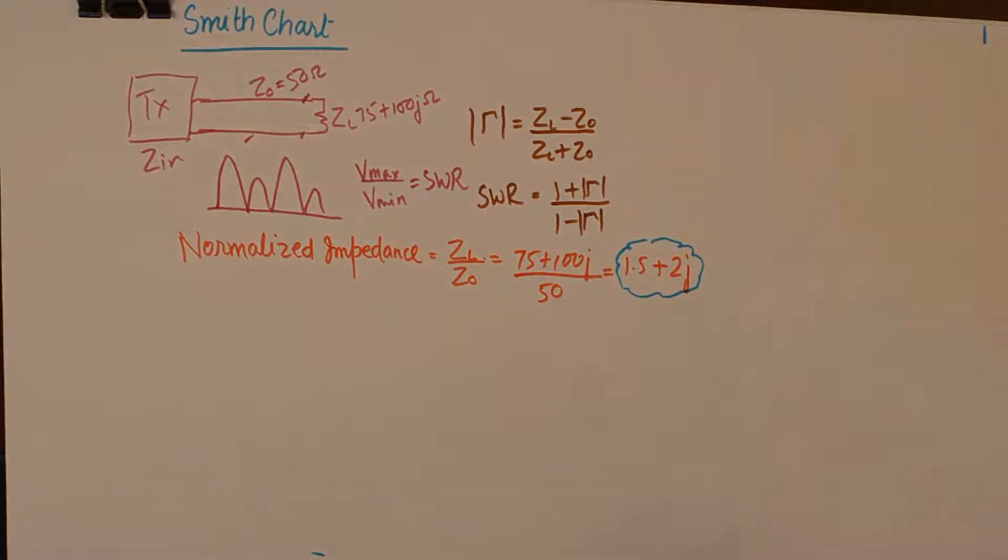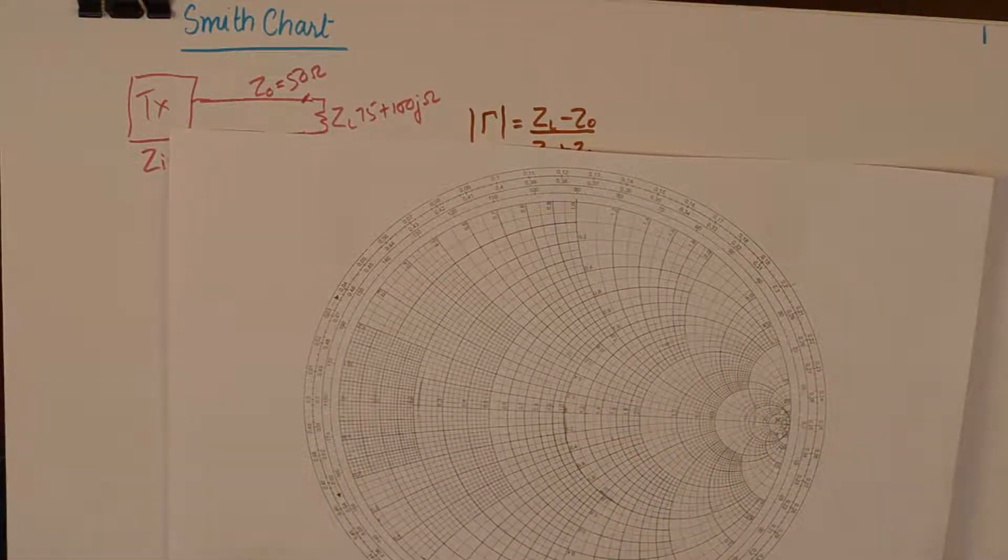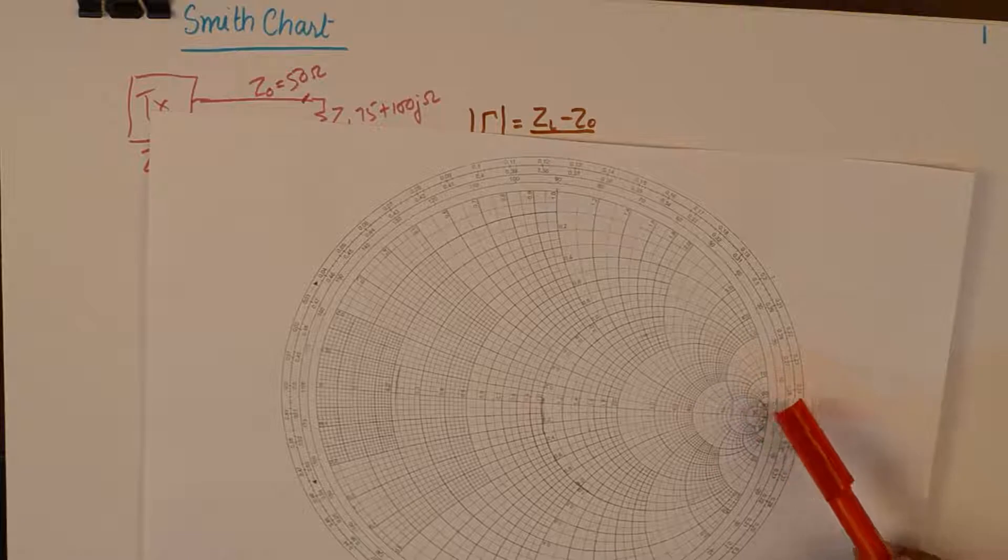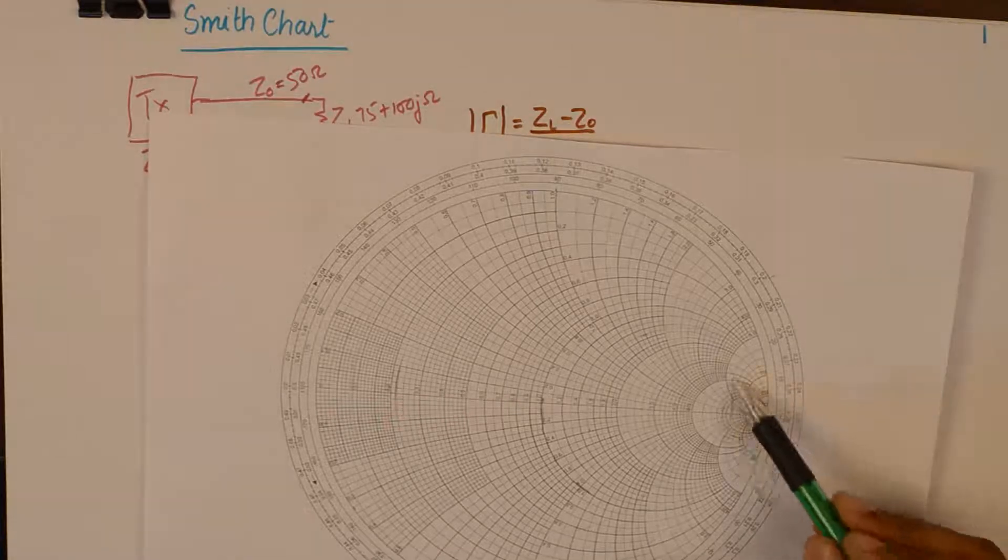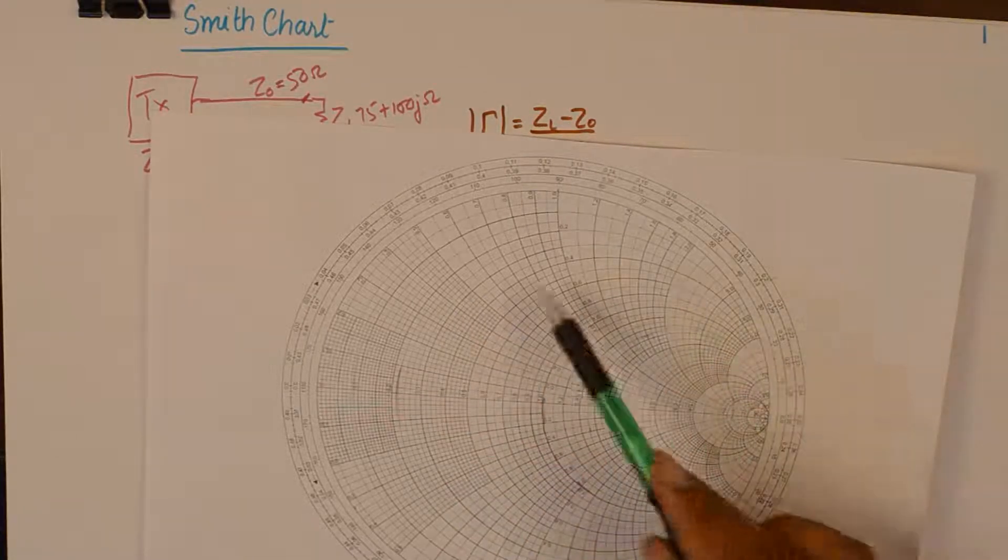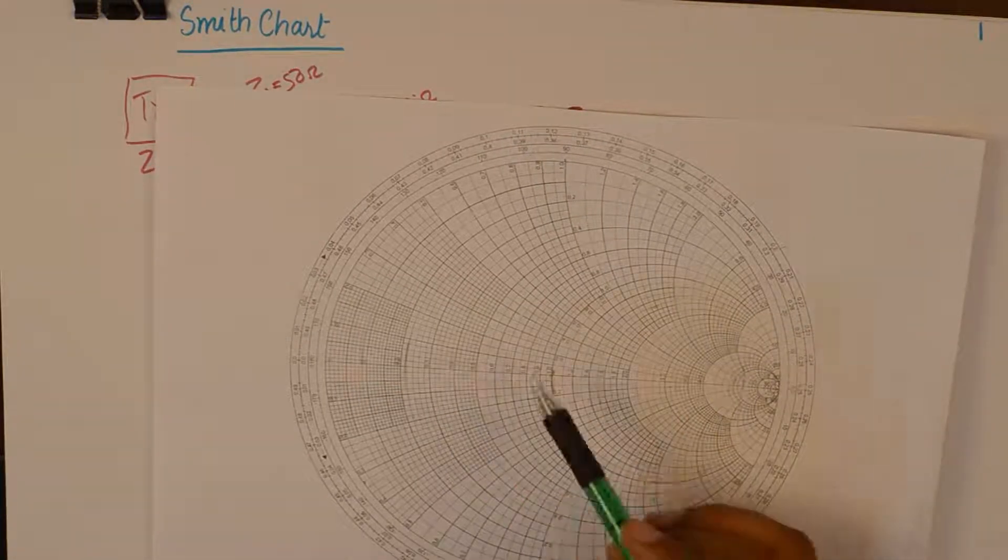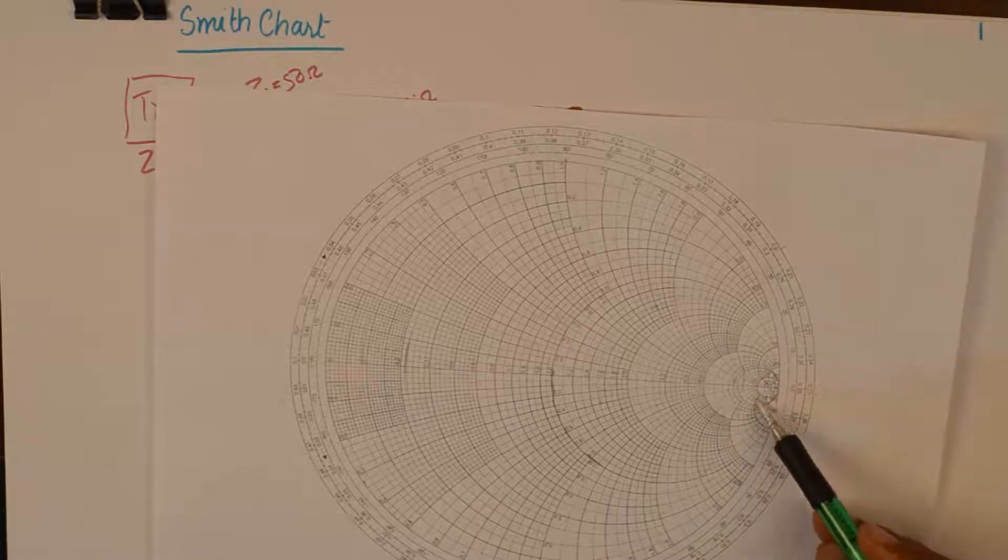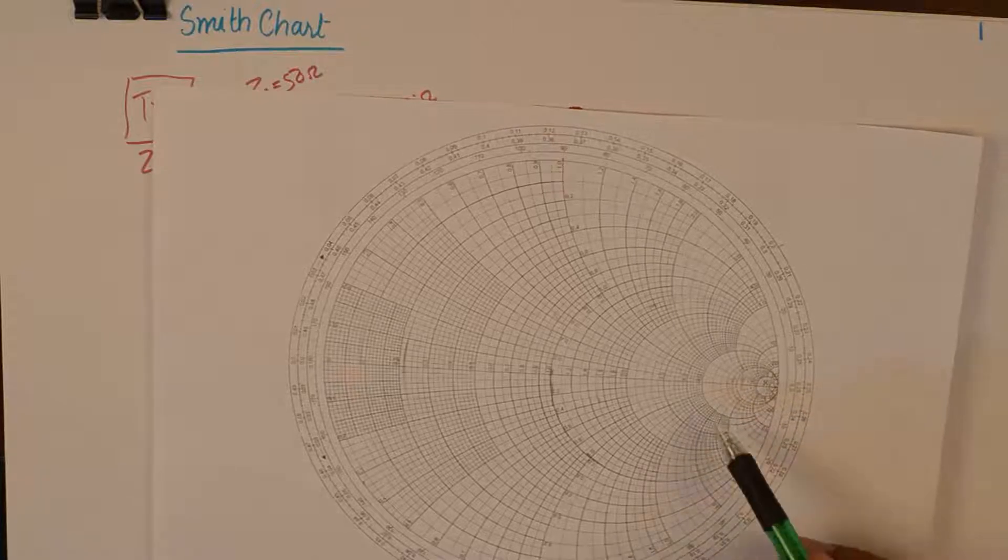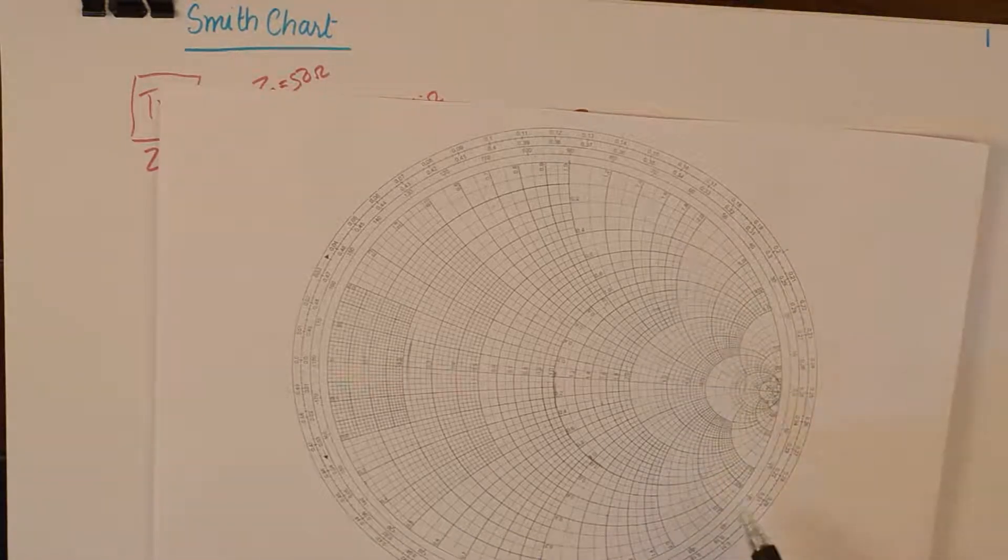So, I will bring in the Smith's chart and I will explain what this chart is all about. In this chart, you will find two types of circles, one are full circles. You will find the full circle starting from this point onwards and you will find them like this increasing in diameter. And then you will find half circles like this in the lower portion of the Smith's chart and half circles on the higher portion of the Smith's chart.